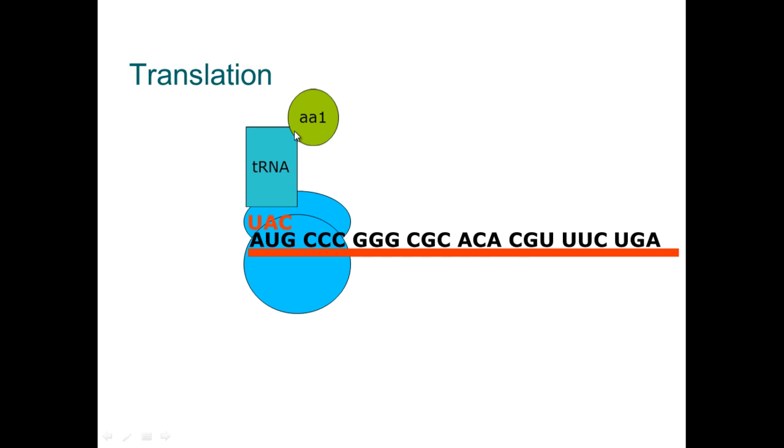And what will happen is the ribosome will move down and it will continuously read the code and the correct amino acid will be brought in. And this will continue until it reaches a codon which means stop, and it's at that point that the protein is made. But all it is, is this mRNA is a code and this ribosome reads the code so that the specific order of amino acids to make the correct protein is made.